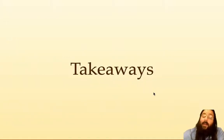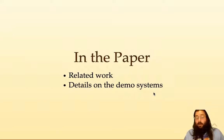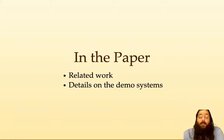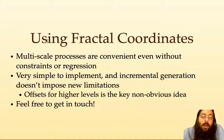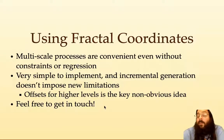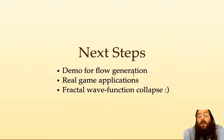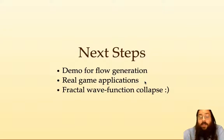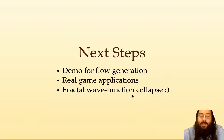What are the takeaways? First, the paper has some really cool related work you should read, plus details on those demo systems. Second, I want people to use fractal coordinates — it's dead simple to implement the math of who's your parent and who's your child, having multiple grids instead of a single grid. You don't have to do the full regression to the origin if you don't want to; you can just use multiple-scale grids to do cool stuff. For next steps: I want to make a demo for flow generation, have some real playable applications, and if you've heard of wave function collapse, I want to do fractal wave function collapse, which should be pretty fun. Thank you for listening.